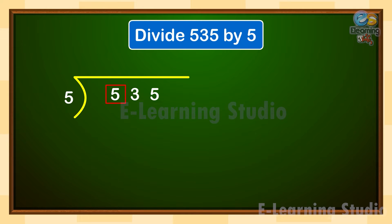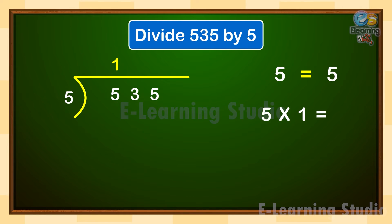check if it is greater than or equal to the divisor. Here, 5 is equal to 5. 5 goes into 5 one time. Write 1 as the first digit of the quotient on the top. Write the product — 5 ones are 5 — below 5, and subtract to get 0. Bring down the next digit of